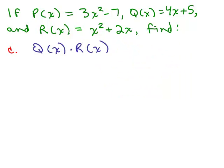Part C says Q(x) times R(x). Well, we replace Q(x) with 4x + 5, because that's what it says, Q(x) equals 4x + 5, times R(x), and it says R(x) is x² + 2x.